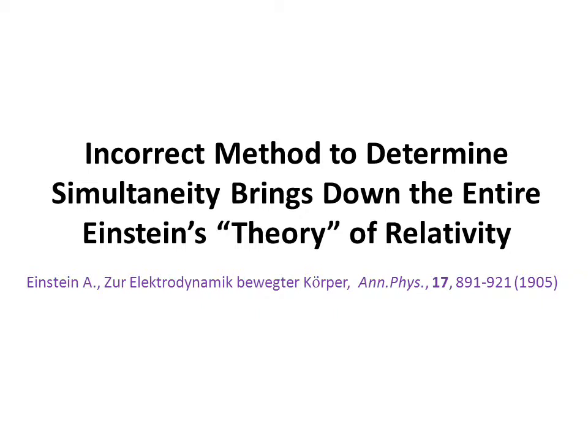Moreover, if this light ray method is to be used, a conclusion exactly opposite to Einstein's conclusion is reached — namely, that simultaneity is not relative but absolute. Paradoxically, exactly by using this incorrect light ray method in conjunction with the second postulate of the so-called theory of relativity proves the true nature of simultaneity, namely its absolute character.